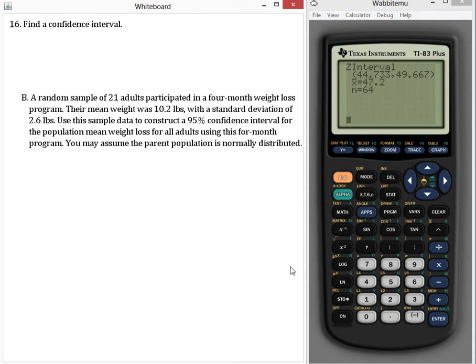A random sample of 21 adults participated in a four-month weight loss program. Their mean weight loss was 10.2 pounds with a standard deviation of 2.6 pounds. Use this sample data to construct a 95% confidence interval for the population mean weight loss for all adults using this four-month program. You may assume the parent population is normally distributed.